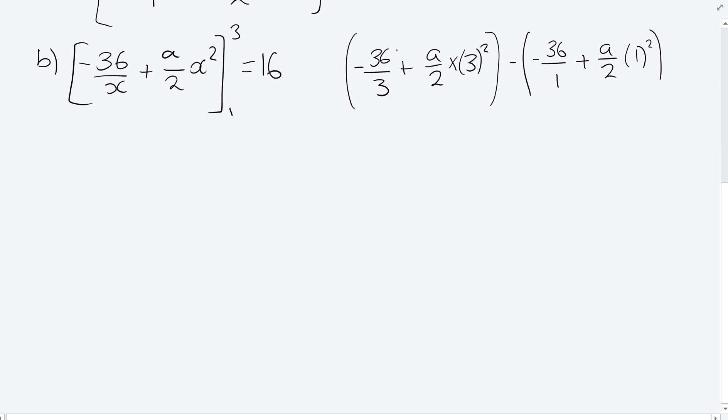So minus 36 over 3 is minus 12, and plus 9a over 2. And from that, sorry, I'll put my bracket in too early. From that I'm subtracting minus 36 over 1, which is minus 36, plus a over 2.